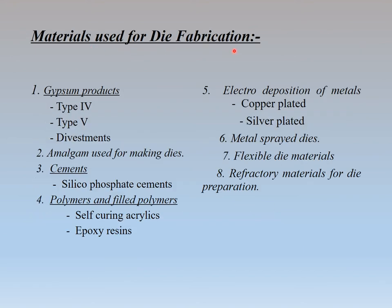Die materials used for fabrication include gypsum products type 4 and type 5 die divestments. Also amalgam is used for making dies, cements such as silico-phosphate cements, polymers, epoxy resins, and self-curing acrylics. Electrodeposition of metals is also used — copper plated and silver plated — as well as metal-sprayed dies and flexible die materials. Commonly used are gypsum products.